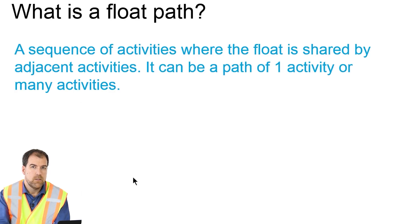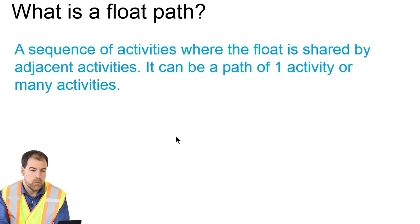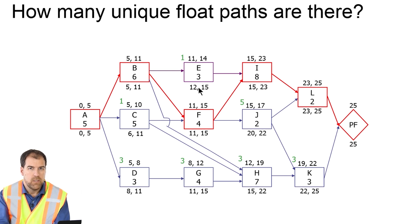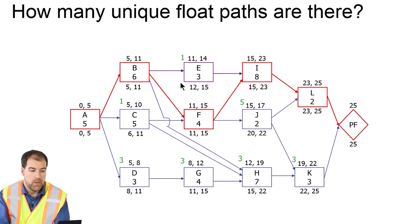So what is a float path? It's a sequence of activities where the float is shared by the adjacent activities. That float path can be a float path of one activity or many activities. Let's look at activity E — it has one day of float, but there are no adjacent activities with the same float, so it's on a float path all on its own. Same thing with C, and same thing with J.